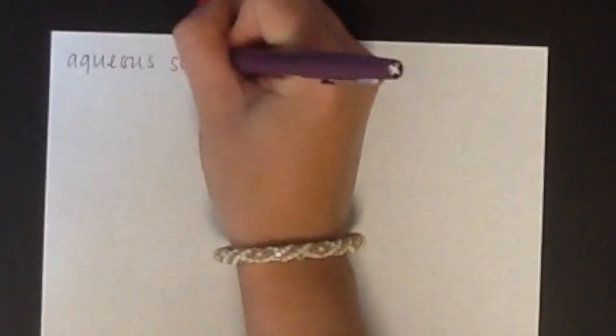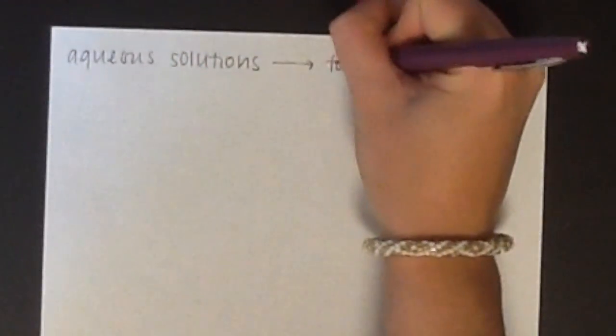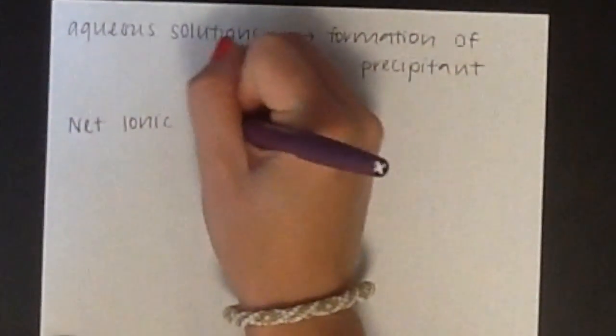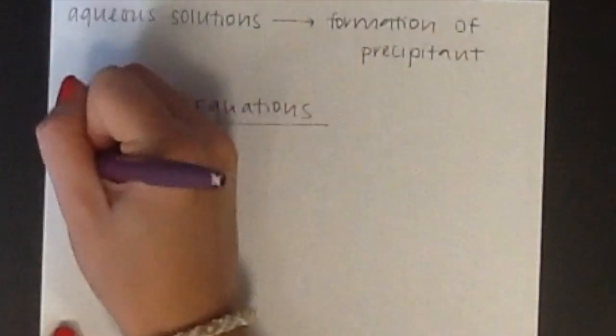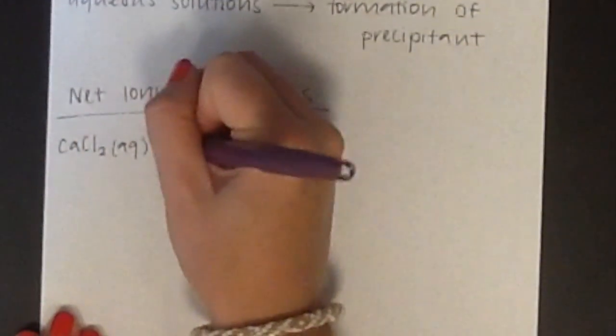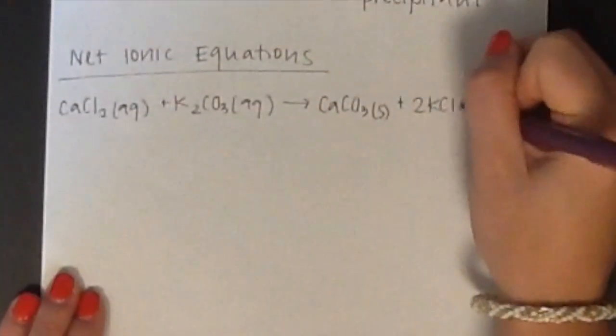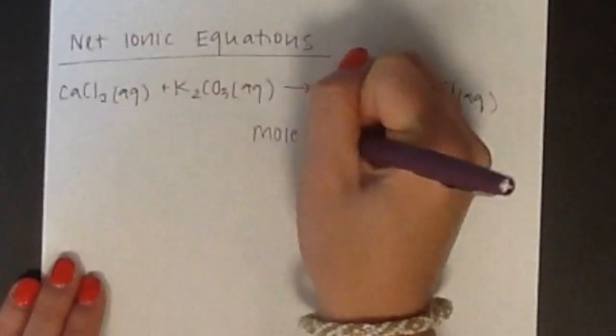In reactions that occur between aqueous solutions that form precipitates or a solid, these reactions can be written in the form of a net ionic equation. For example, the reaction between calcium chloride and potassium carbonate will form calcium carbonate and potassium chloride. Calcium carbonate is a solid. This is called your molecular equation.